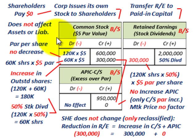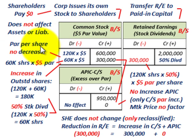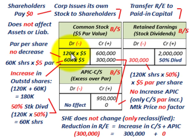Looking at the common stock account — it doesn't affect any assets or liabilities. It's simply a transfer from retained earnings (earned capital) into contributed capital. The key point is that the par value per share does not decrease with this large stock dividend. We had 120,000 shares at $5 par; we're issuing 60,000 additional shares at the $5 par amount. So we increase our shares from 120,000 to 180,000.